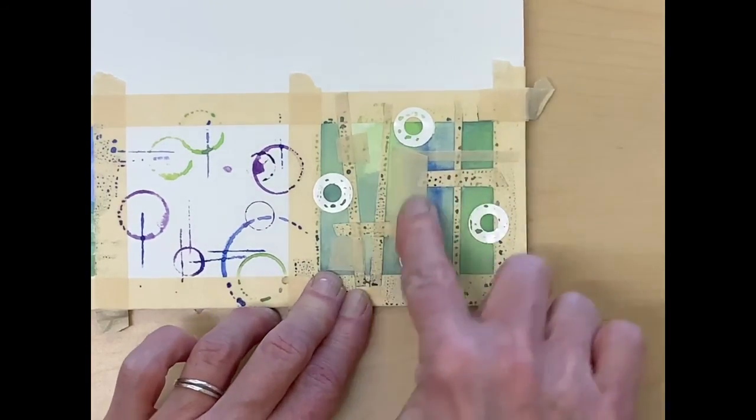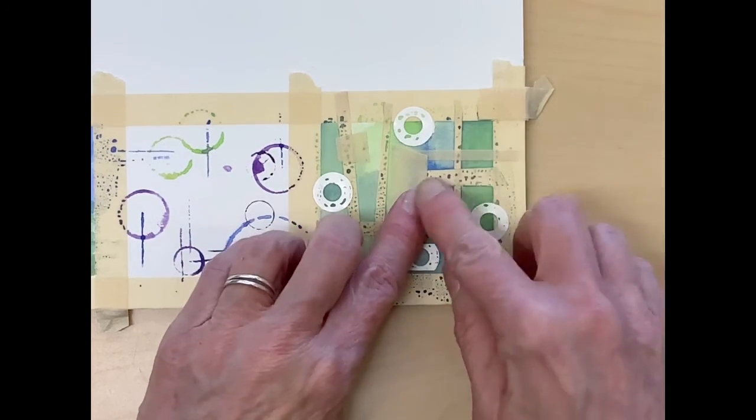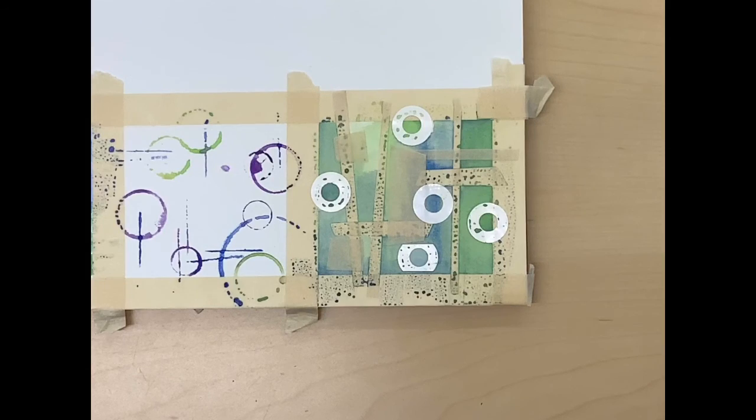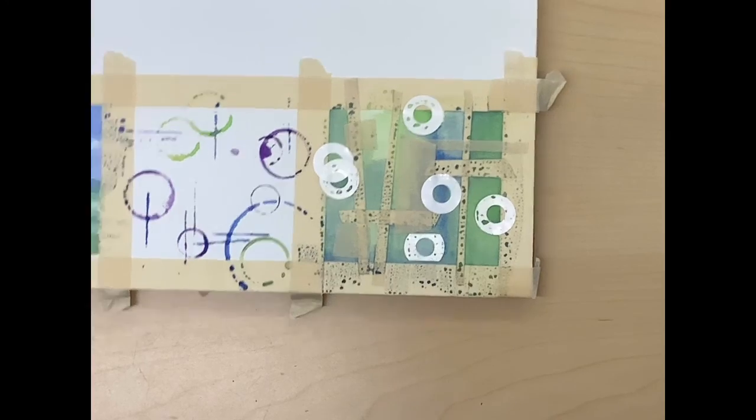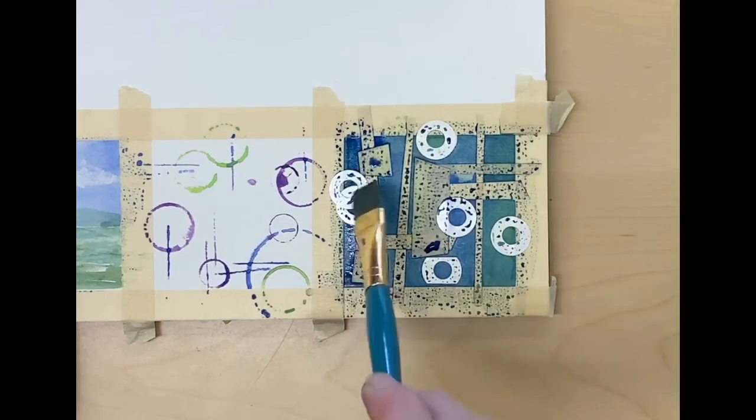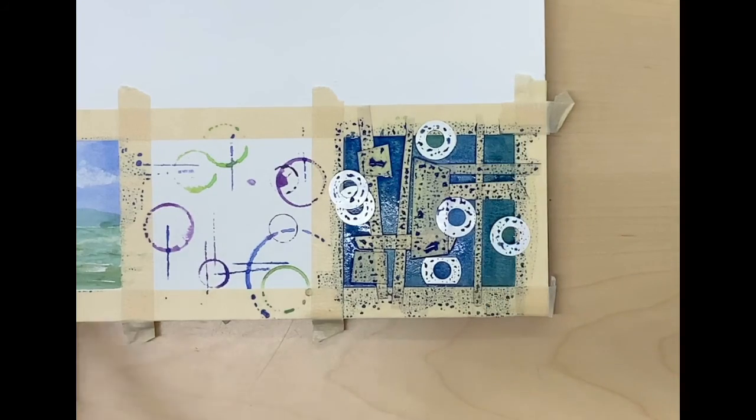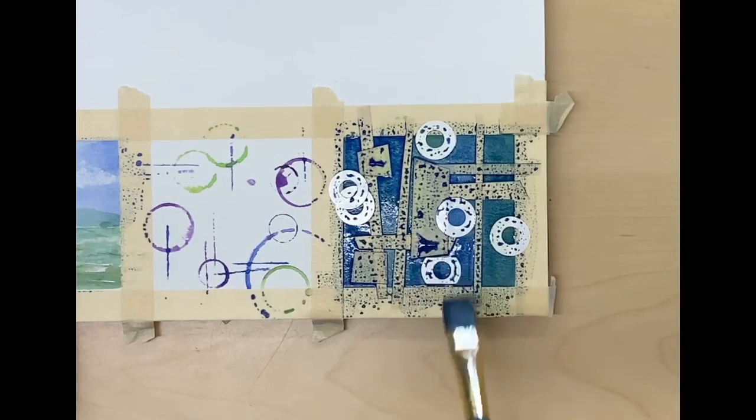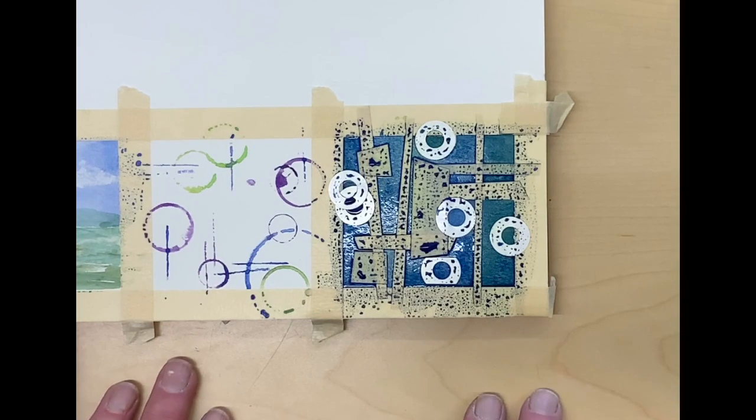So now wherever I put tape that will preserve this greenish blue layer. Now I will put this second layer of paint on and I've mixed up a darker greenish blue. I want to have some contrast between the underlying colors, but you can go in any direction you want. It doesn't have to be in the same color family. And now we have to let it totally dry before we take off the tape.